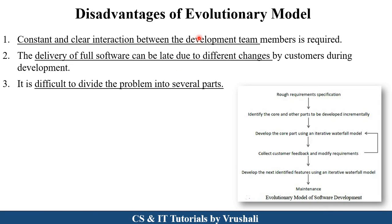The disadvantages of the evolutionary model: First, constant and clear interaction between the development team and customer is necessary, because after every module feedback is taken, which can take a lot of time in some projects. Second, delivery of the full software can be late due to changes — if the customer wants changes in every module, the product delivery is delayed. Third, it is very difficult to divide the problem into several parts; some projects are very complicated and it may be difficult to divide the product module by module.